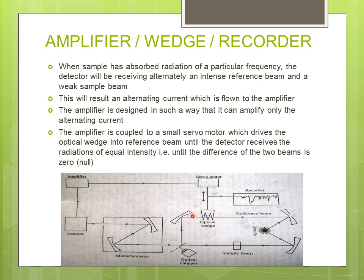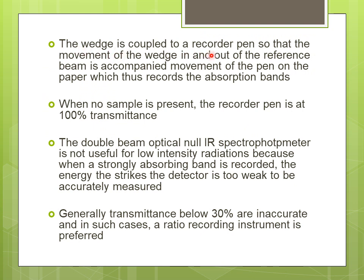Since the sample beam is weak and the reference beam is intense, the servo motor moves the optical wedge into the reference beam, decreasing its intensity until the intensities of both beams become equal — that is, their difference becomes zero. This optical wedge is coupled to the recorder pen, so the movement of the wedge in and out of the reference beam is accompanied by movement of the pen on the paper, which records the absorption bands.